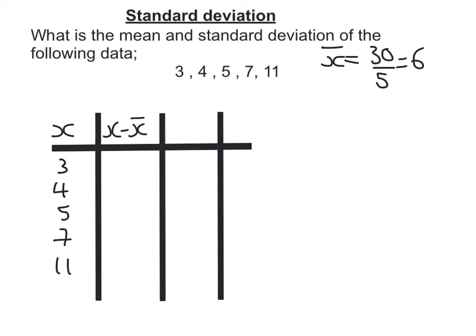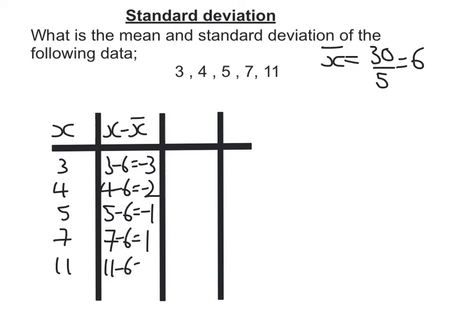So 3 take away the mean of 6 is minus 3. 4 take away 6 is negative 2. 5 take away the mean of 6 is negative 1. 7 take away 6 is 1. And 11 take away 6 is 5.